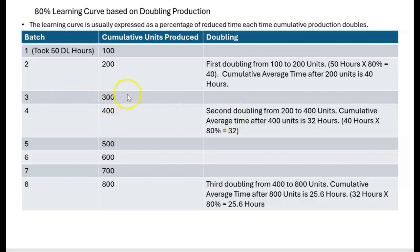At batch three we make another 100 units — we're up to 300 cumulative — but we don't apply the 80% because we haven't doubled again. Then at batch four we're up to 400 units — that's our second doubling from 200 to 400. So the cumulative average time after 400 units is now down to 32 hours: we take the old cumulative average of 40 hours and multiply by 80%. After 400 units, the cumulative average time is 32 hours — though this is not the time to produce any specific batch.